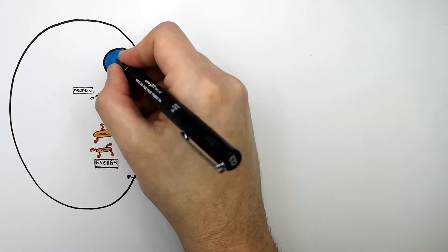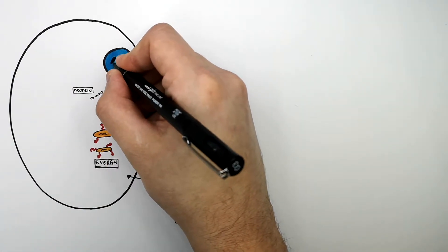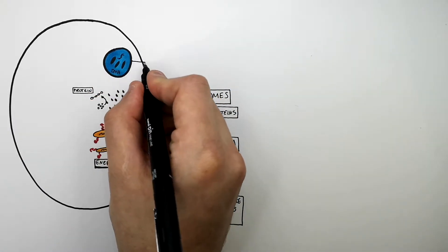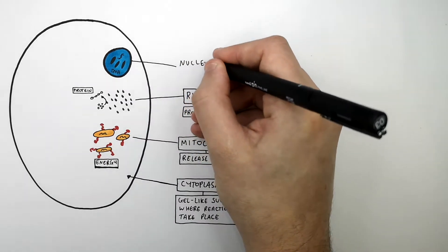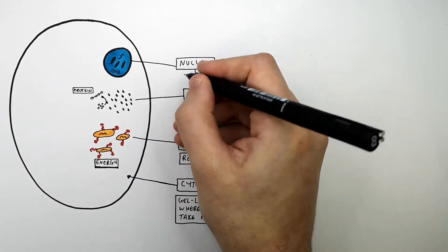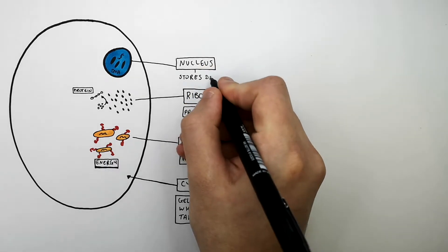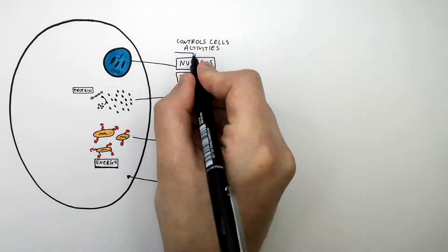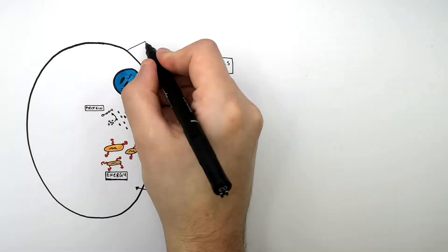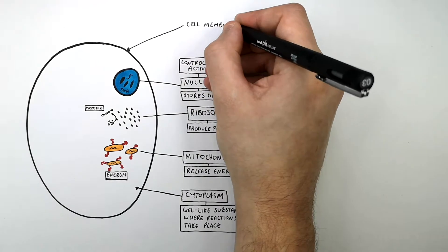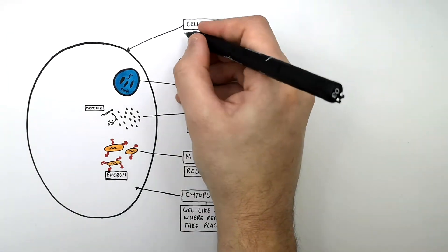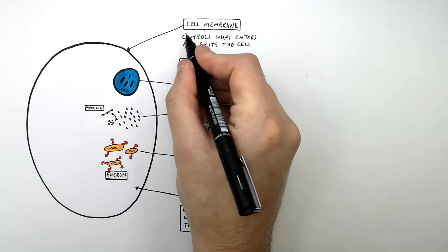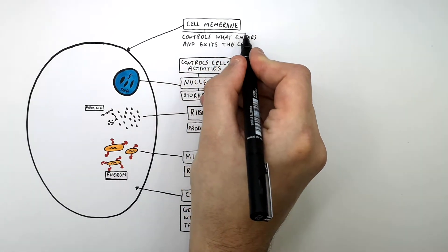This organelle is the nucleus, and the nucleus stores DNA and it controls the activities of the cell. This is the cell membrane of the animal cell. The cell membrane controls what enters and exits the cell.